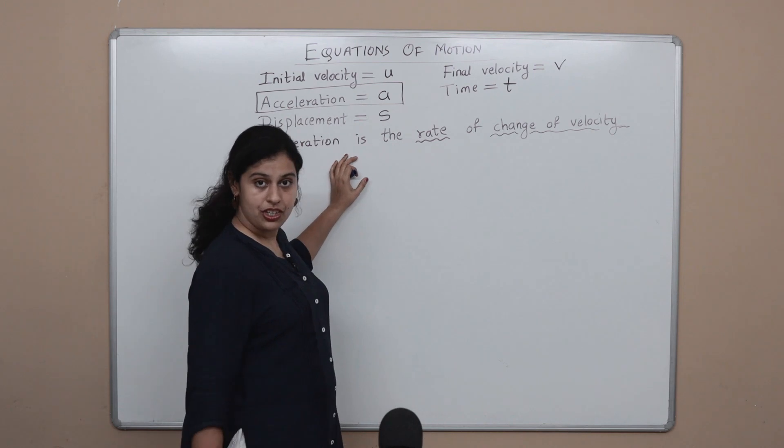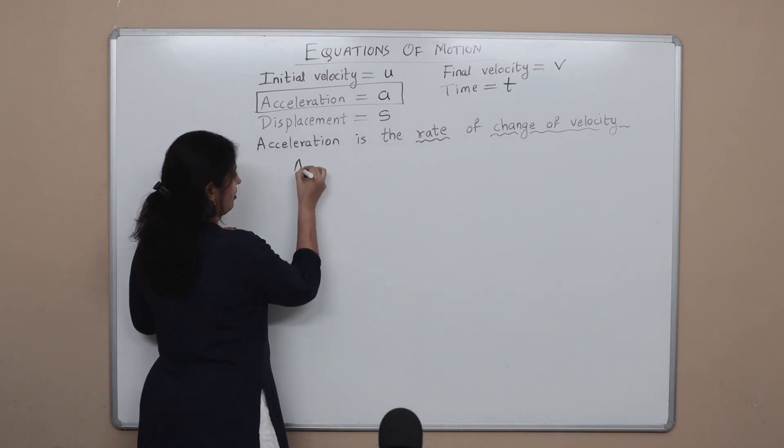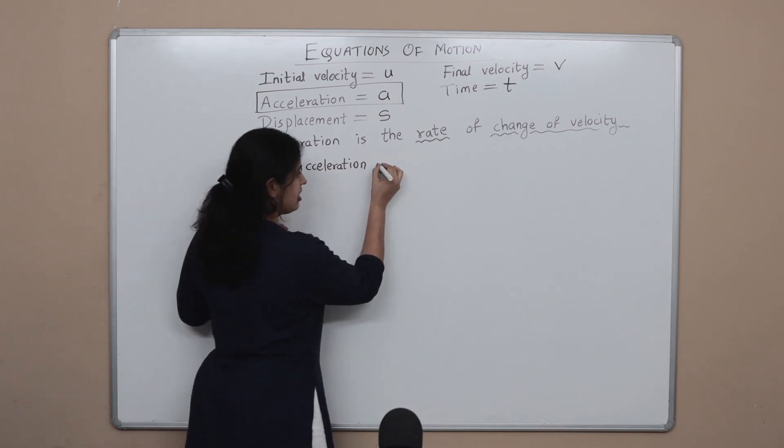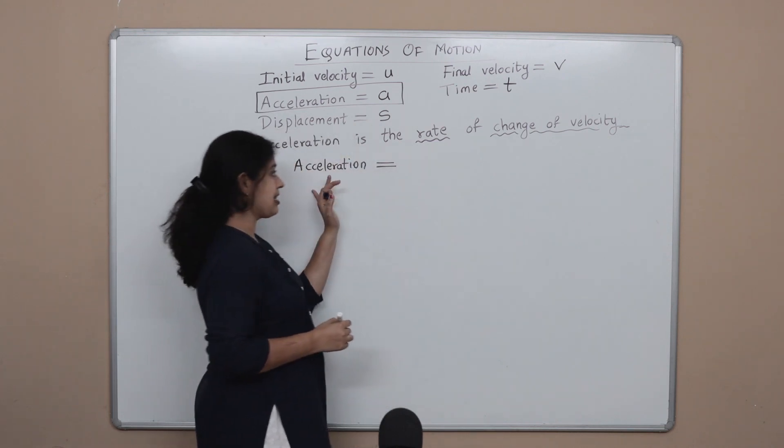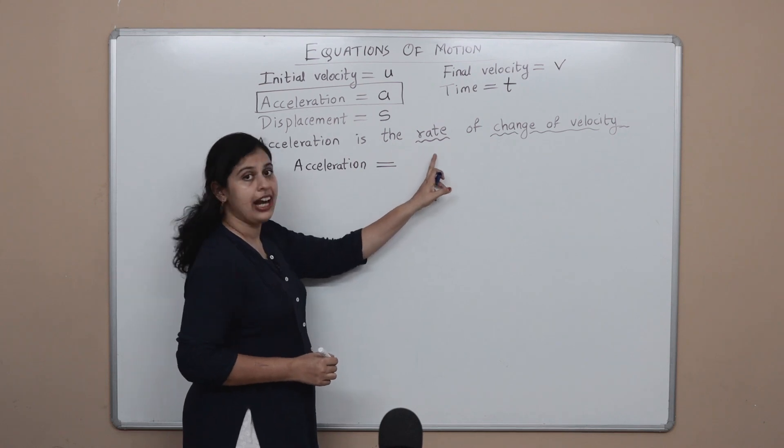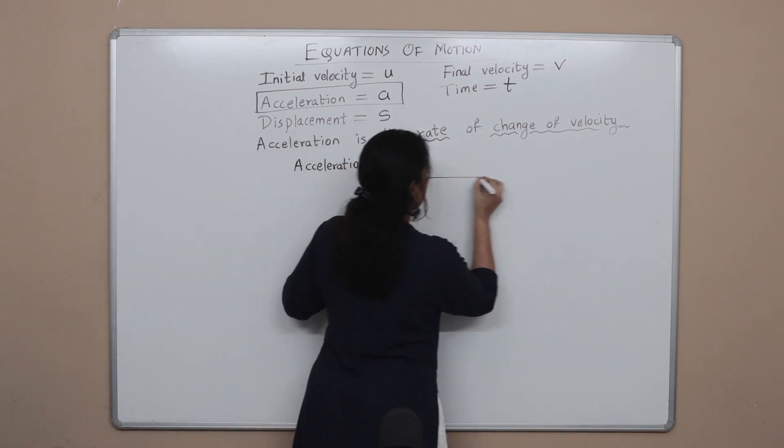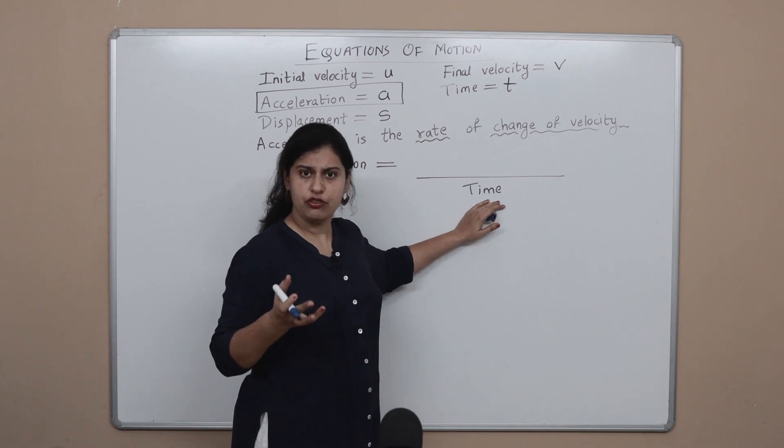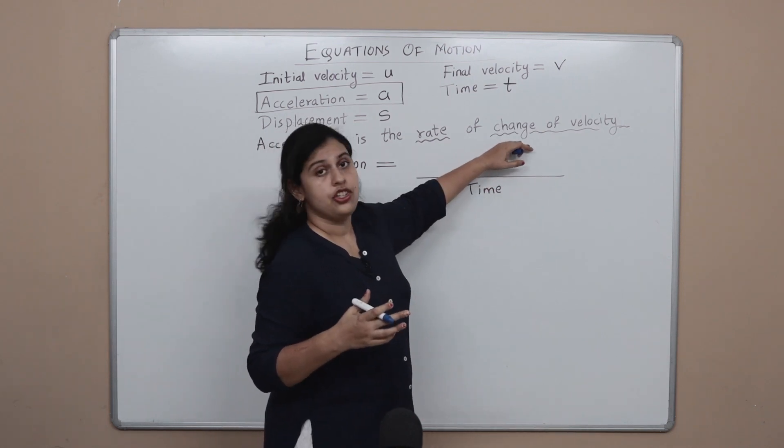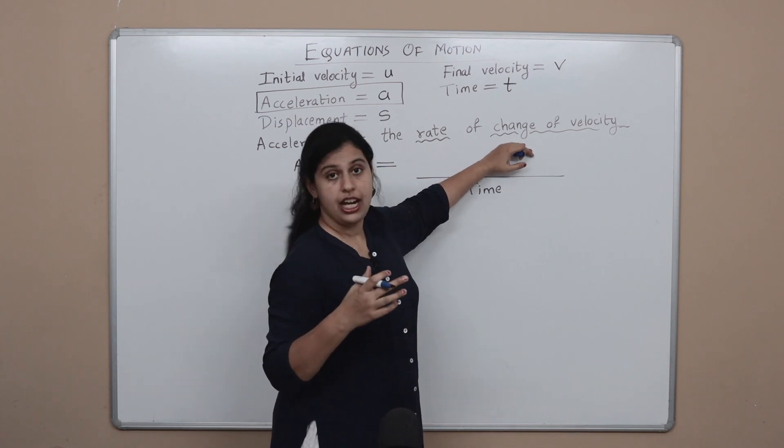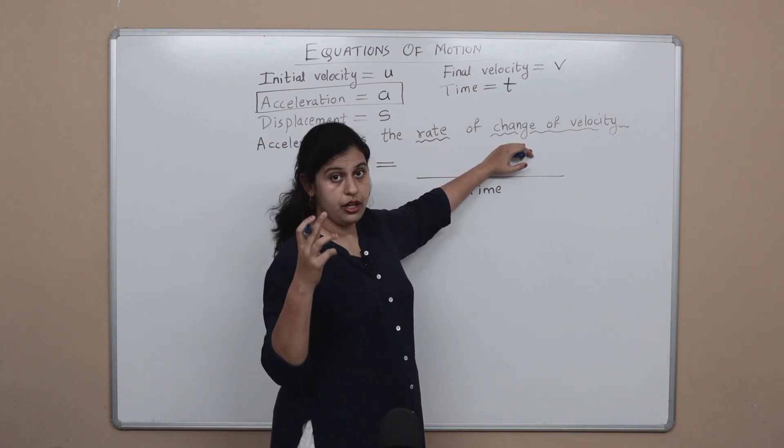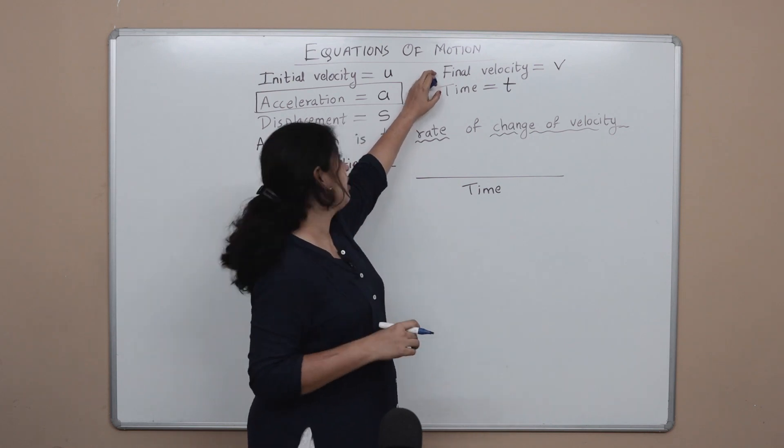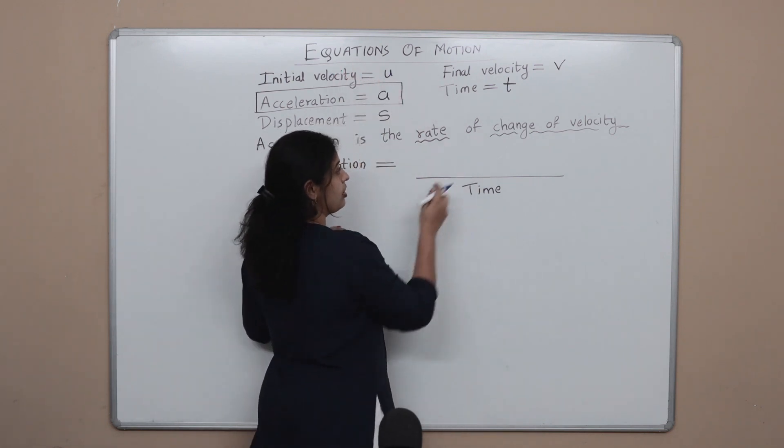That's what we are going to do. We are going to look at the definition again. The definition says that acceleration is the rate. The moment we have rate, we have time in the denominator. Now it's the rate of what? It's the rate of change of velocity. Whenever we have change of velocity, it is always new minus old. The new velocity here is the final velocity, the old velocity here is the initial velocity. So what goes in the numerator is final velocity minus initial velocity.